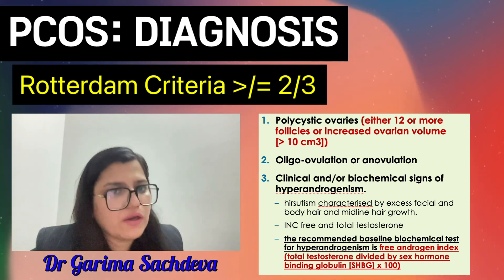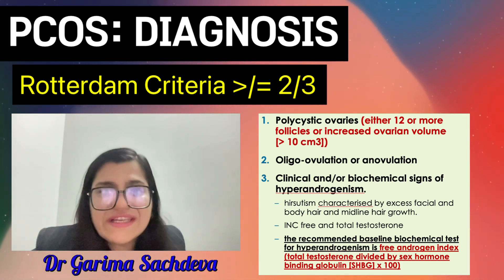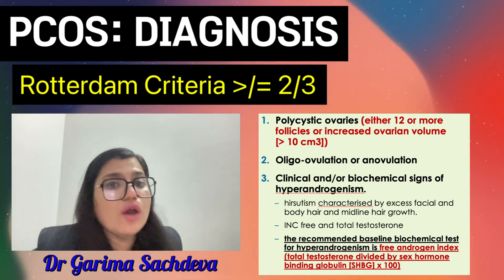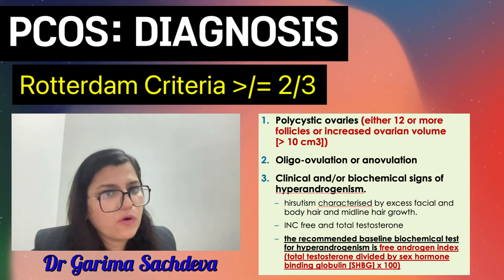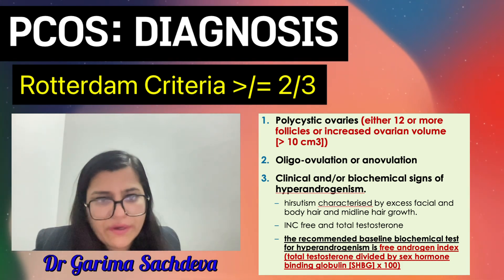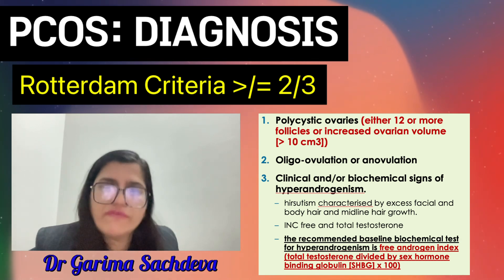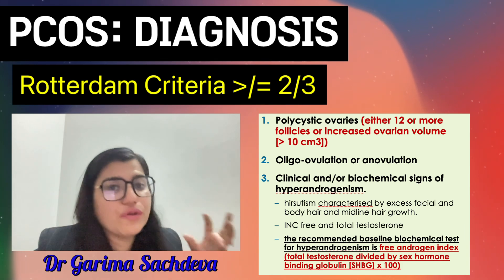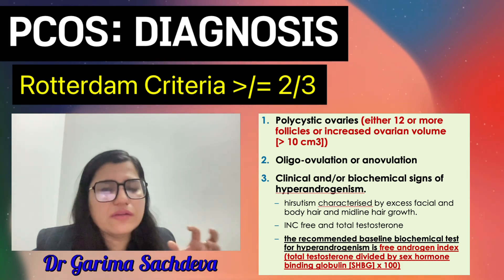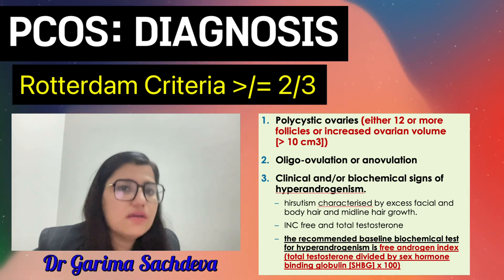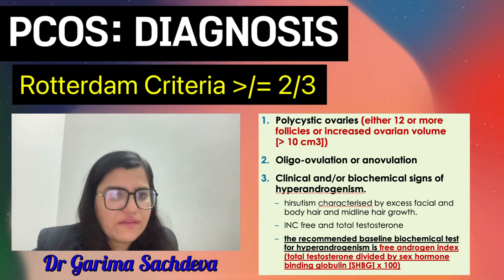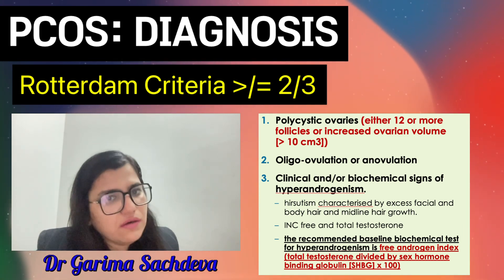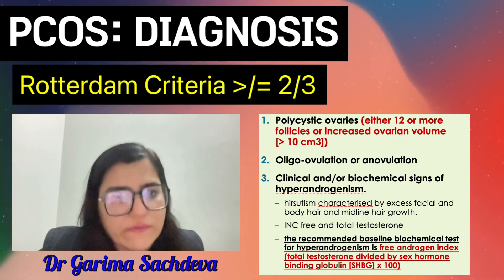Coming to the first one — ovulatory dysfunction. Ovulatory dysfunction could result in oligoanovulation, which is much more common, or polymenorrhea, which is seen in just two percent of patients with PCOS. It is defined as a period cycle that is either less than 21 days or more than 35 days, or less than eight cycles in a year.